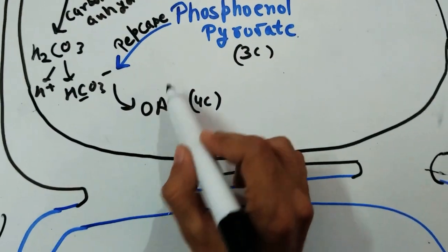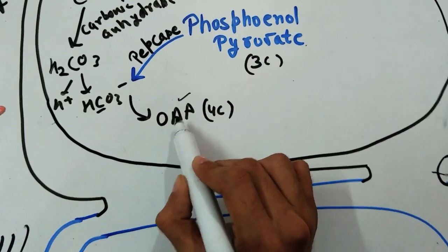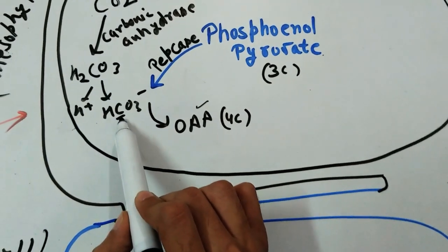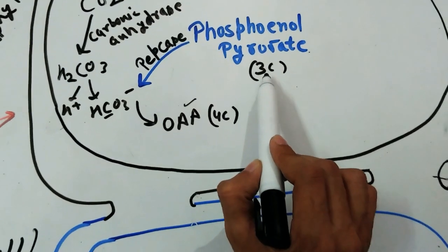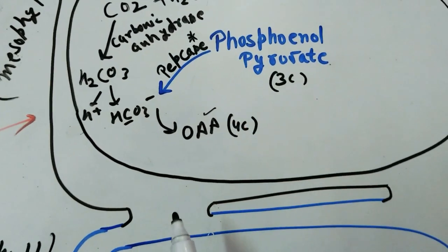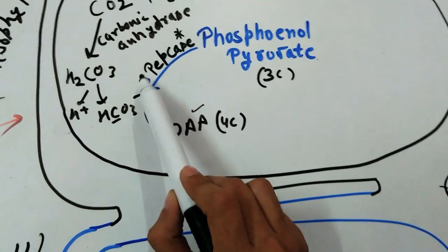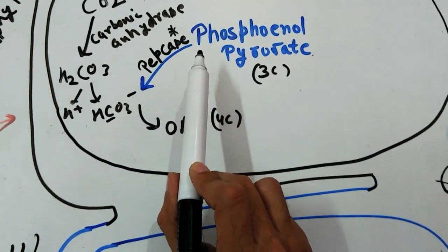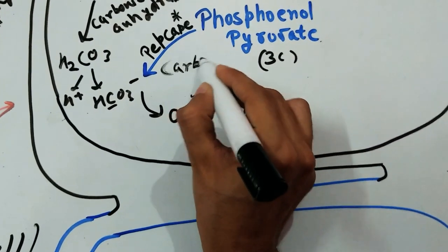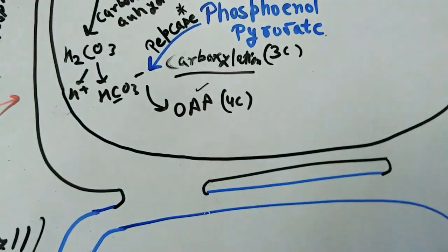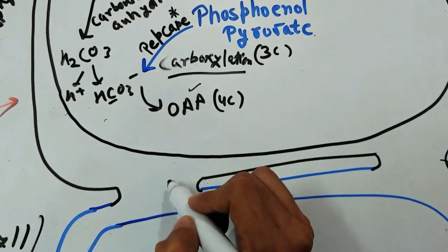We call this the C4 cycle because the first stable product of this pathway is a four-carbon compound — oxaloacetic acid (OAA). HCO3⁻ undergoes carboxylation with phosphoenolpyruvate (PEP), a three-carbon compound, with the help of the enzyme PEP carboxylase. Unlike Rubisco, which has dual carboxylation and oxygenation activity, PEP carboxylase only performs carboxylation. So this step is the carboxylation step, where carbon dioxide is fixed. One carbon plus three carbons gives a four-carbon compound — oxaloacetic acid.